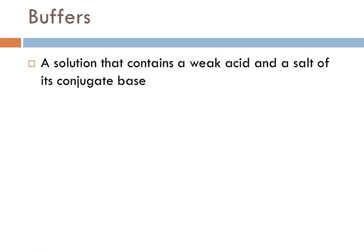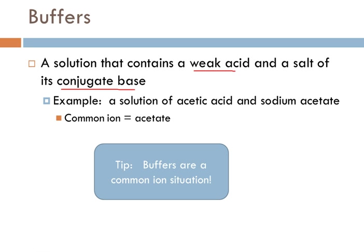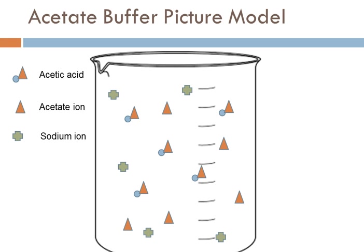When we're talking about a buffer, usually we're preparing an aqueous solution, and this aqueous solution needs to contain two things: a weak acid and an ionic compound, a salt, that contains the conjugate base of the weak acid as the anion. That's one way to make a buffer. For example, we might use acetic acid, which is a weak acid, and then add sodium acetate to the solution. The common ion here is acetate, and really, that's what we're dealing with in terms of buffers — common ion equilibria.